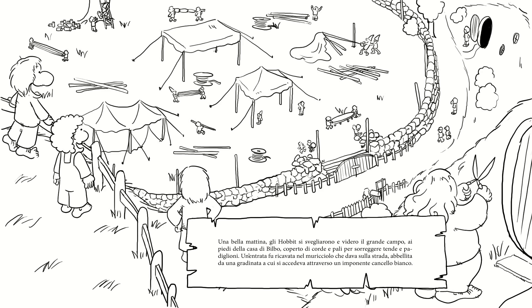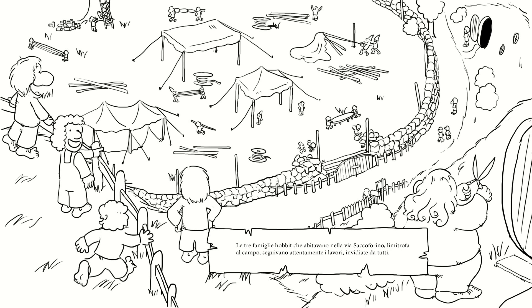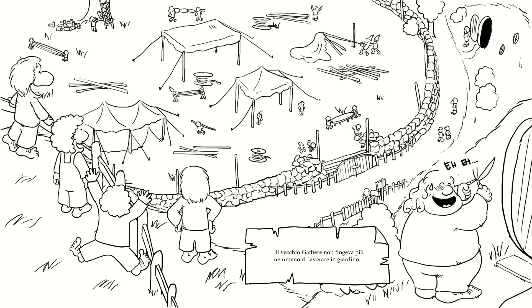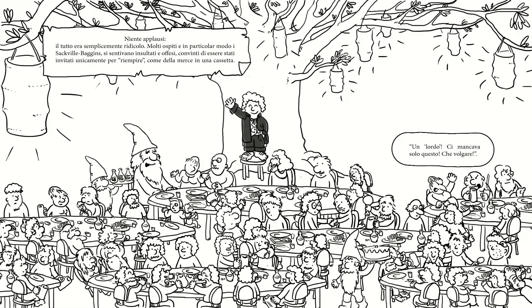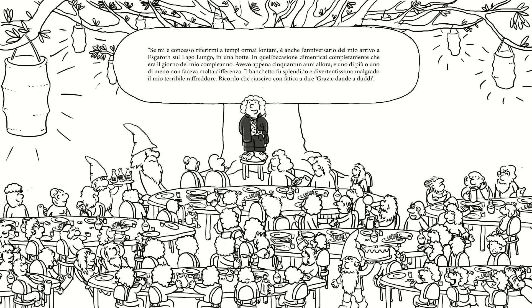Un cartello fu attaccato al cancello di Casa Baggins: 'Vietato l'ingresso ai non addetti ai lavori per la festa', ma facevano entrare difficilmente anche coloro che partecipavano o pretendevano di partecipare ai lavori. Bilbo era occupatissimo: scriveva inviti, cancellava dalla lista coloro che avevano già risposto, imballava regali e faceva preparativi strettamente personali. Una bella mattina gli Hobbit si svegliarono e videro il grande campo ai piedi della casa di Bilbo coperto di corde e pali per sorreggere tende e padiglioni. Il nostro numero complessivo è 144: siete stati scelti per raggiungere questo notevole totale, un 'lordo', per adoperare la nostra tipica espressione. Molti ospiti, in particolar modo i Sackville Baggins, si sentivano insultati e offesi.